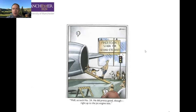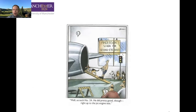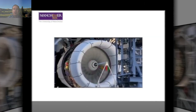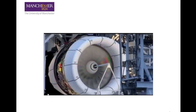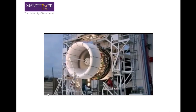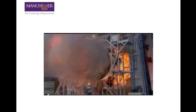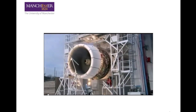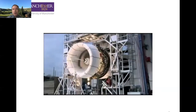As usual, we start with our cartoon. Scratch number 24 — he did pretty good, right up to the jet engine test. And now a little video of a 787 engine blade-out test. In this test, we see what happens when we detonate and separate a blade from the fan, and the resulting effect on the engine.